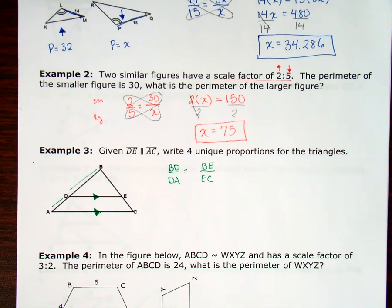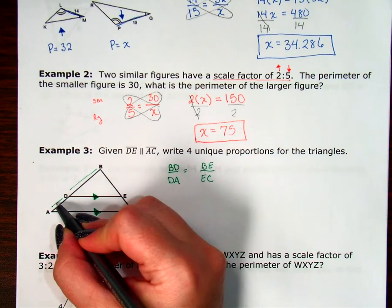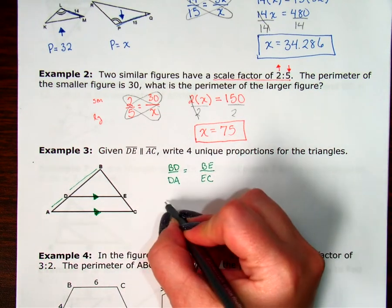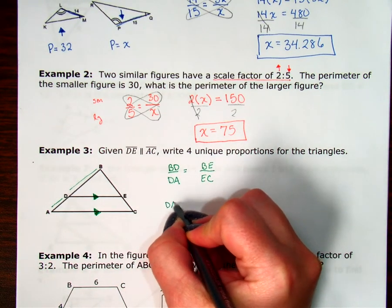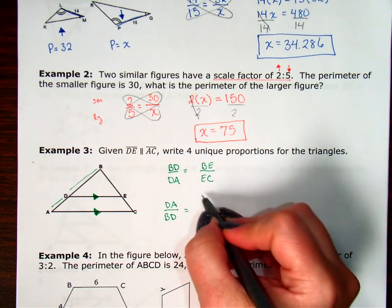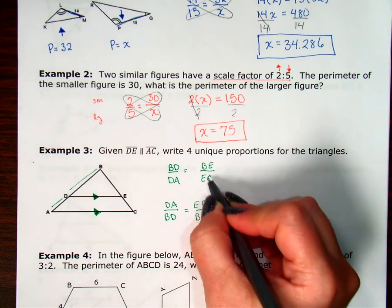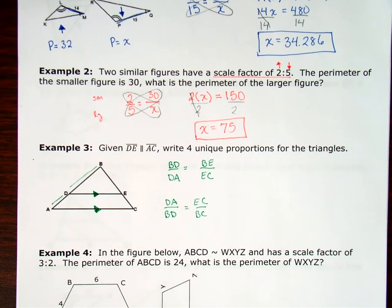Let's do another one. Let's just flip these upside down. Let's do the bottom to the top, bottom to the top. So DA over BD equals EC over BE. I just flipped those over. I just did the reciprocals.